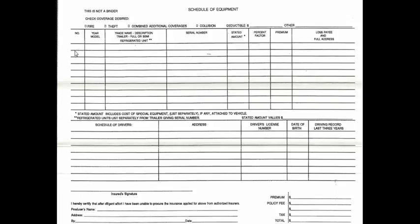The number over here, you put down. The year model over here. The trade name, description, trailer — full or semi. If you're doing the commercial binding, you put it over here. Serial number or VIN number. Stated amount. Recent factory value, put it over here. Premium amount, what it is. Loss payee and full address. Once you do that, if you have more than one, you obviously do that the same over here.